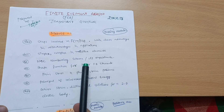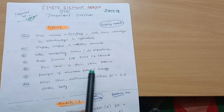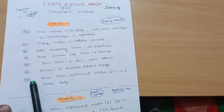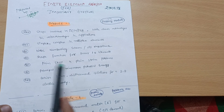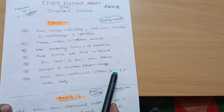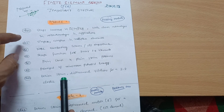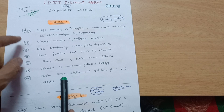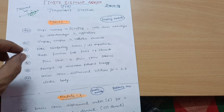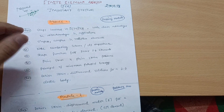Shape function for linear 1D element. Next is: what is the principle of minimum potential energy? Most important one. Last but not least in this module: derive stress-displacement relationships for a 2D elastic body. If you cover these types of questions, you will easily get 20 marks in this module. Don't leave anything I have mentioned here — go through these varieties of questions.